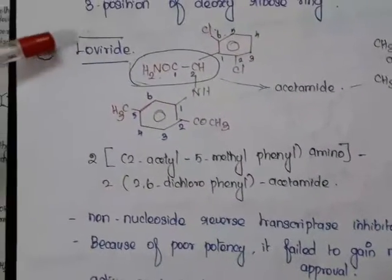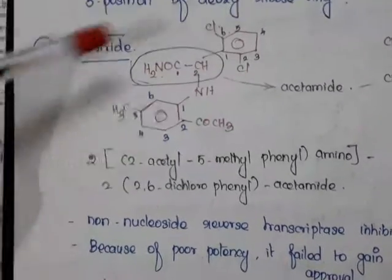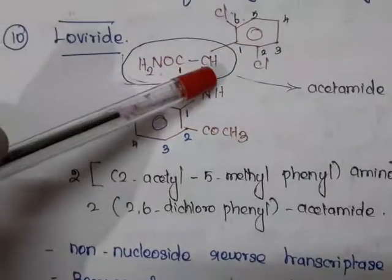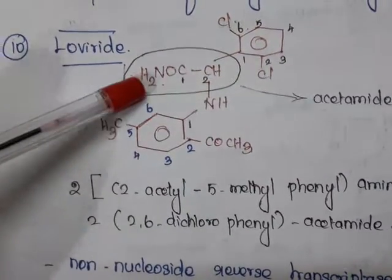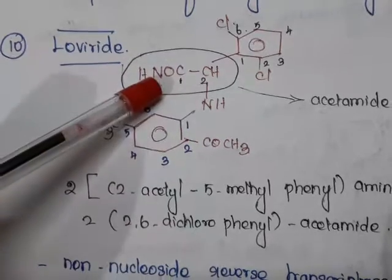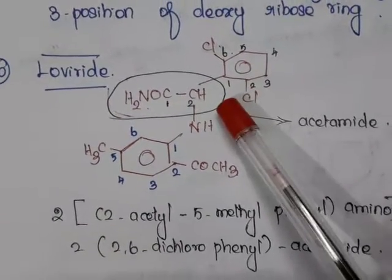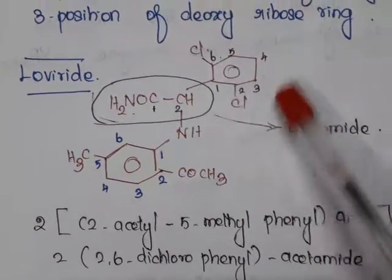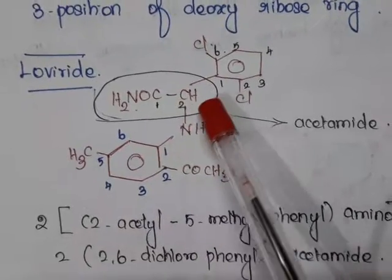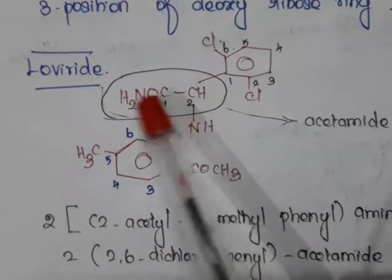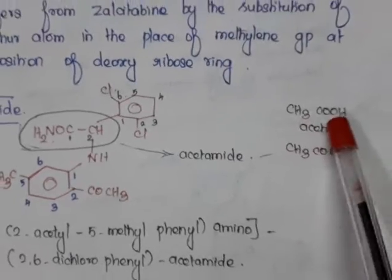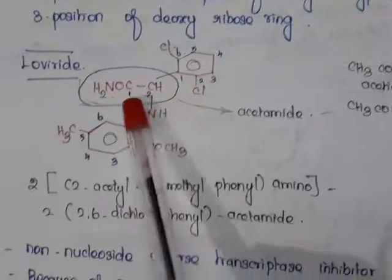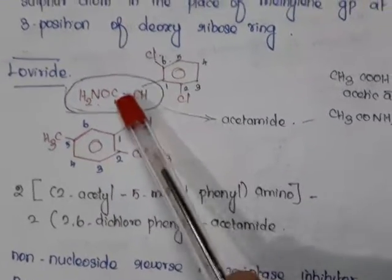The next drug under antiviral is loviride. The structure has two rings, and in the center we have CH₃CONH₂, which is the parent structure. Whenever we want to name a compound, we remove the substituents and put hydrogen in their place. CH₃COOH is acetic acid, so CH₃CONH₂ is acetamide — that is the parent compound.